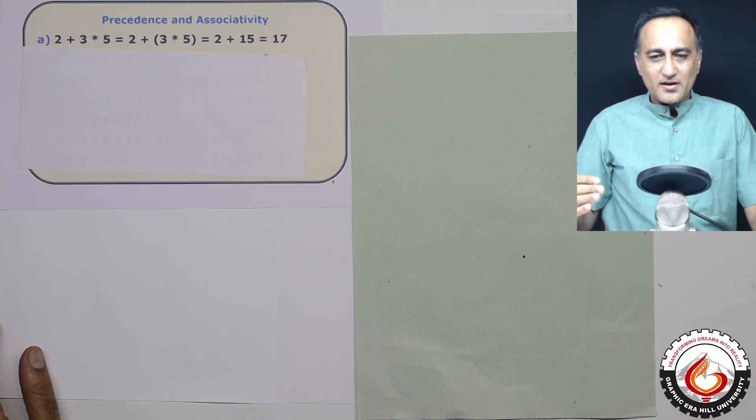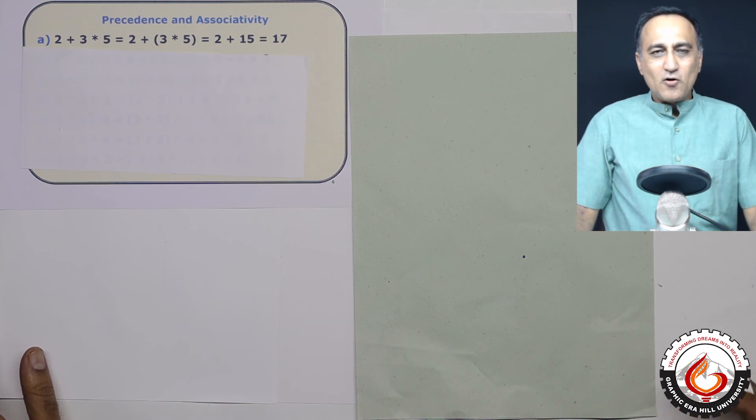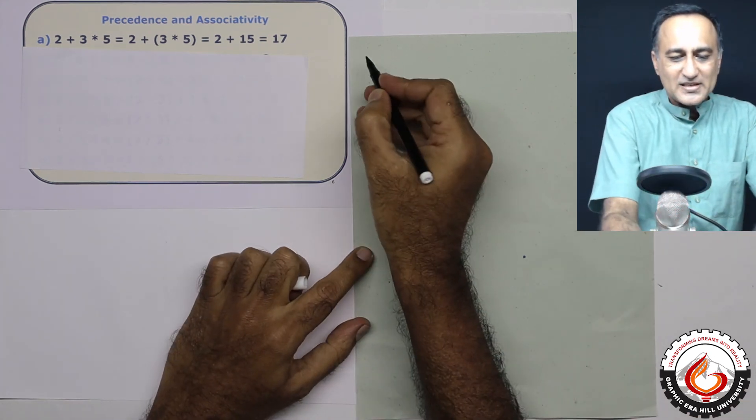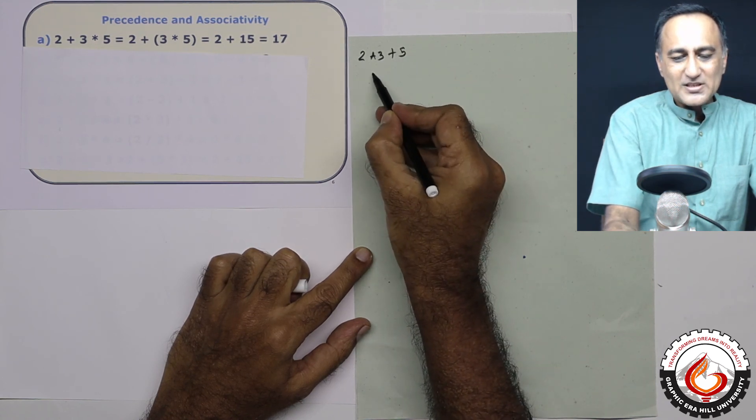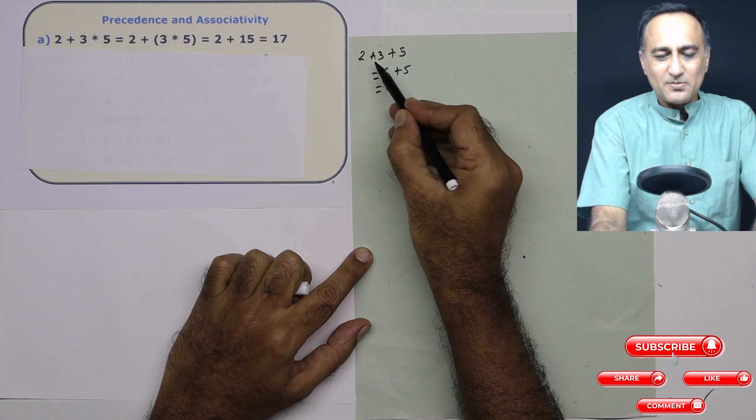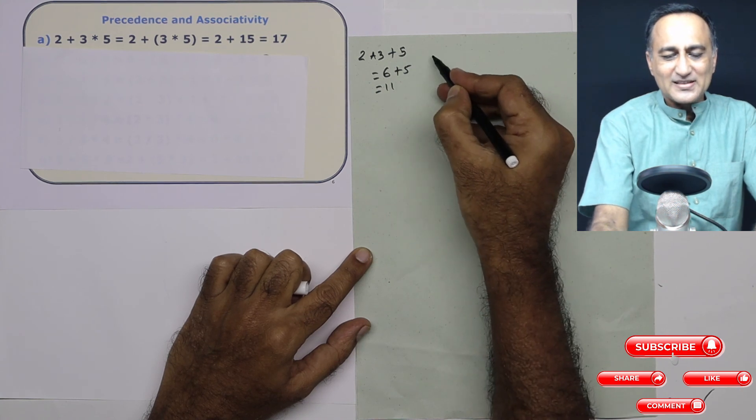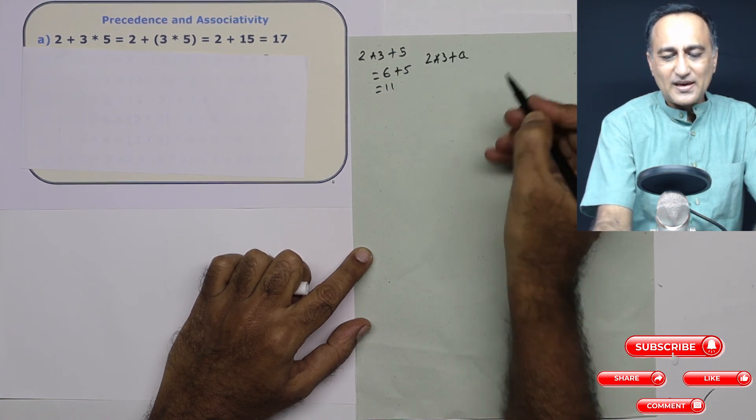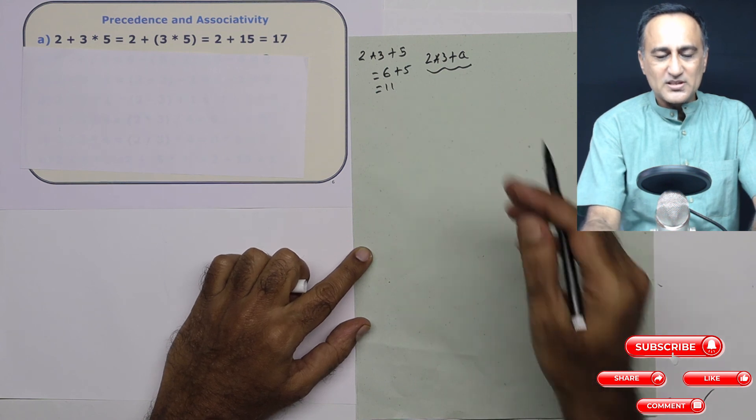So let's first try to understand the last word first, what is an expression? An expression is a combination of variables, constants, and operators leading to a single value after it is evaluated. For example, if I have something like 2 into 3 plus 5, this is going to be 6 plus 5, which is equal to 11. So this is an example of an expression because it's got operators, it's got constants. In place of 5, I could have had 2 star 3 plus a. So this is an example of an expression, the evaluation of which leads to a single value.